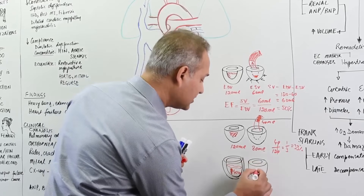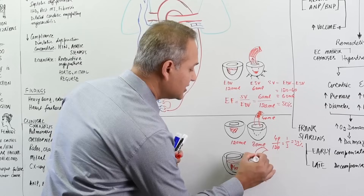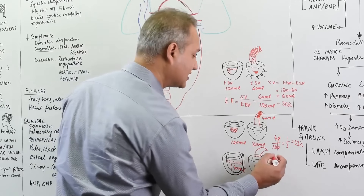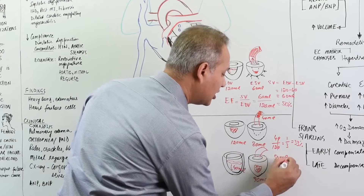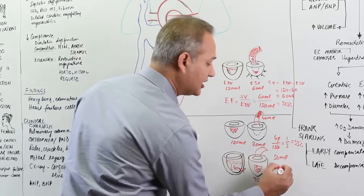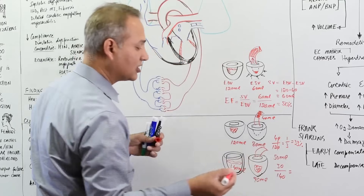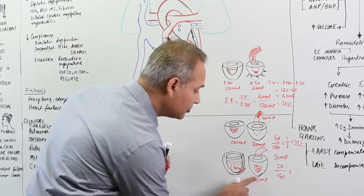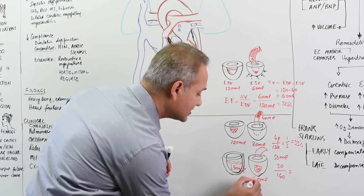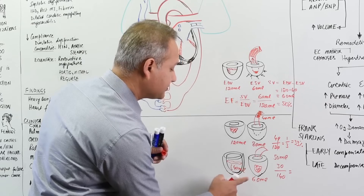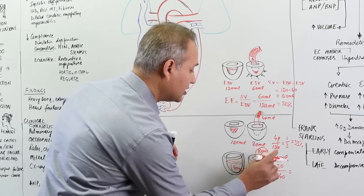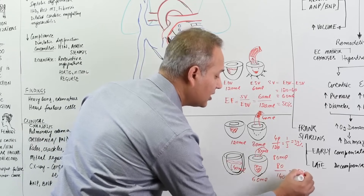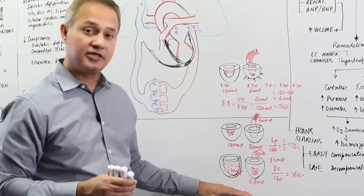The end systolic volume is 60 milliliters, so the blood ejected is 140 minus 60 equals 80 milliliters. Taking the ejection fraction: 80 divided by 140 is even more than 50 percent. The point is that in diastolic dysfunction there may be more blood present and a relatively good amount getting out — ejection fraction can be normal or above normal.